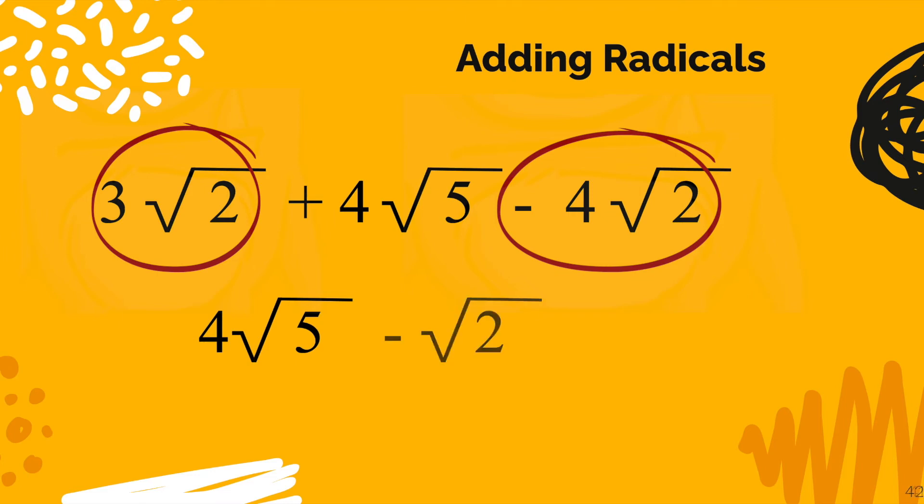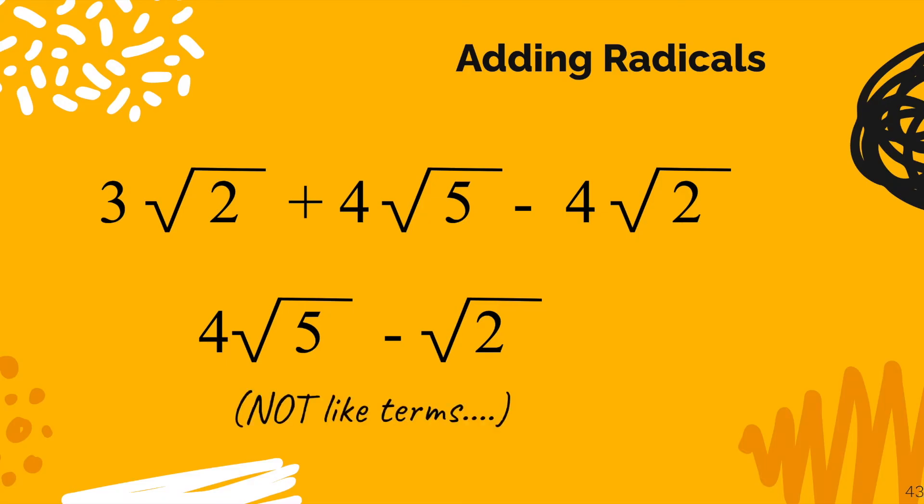So I'm going to bring down that 4 radical 5 and then I'm going to go ahead and combine the radical 2 terms and I get negative 1 radical 2. Of course, I don't have to write the 1 in front. And then just realize that those are not like terms. So that is the answer. I'm going to go ahead and put a box around it.